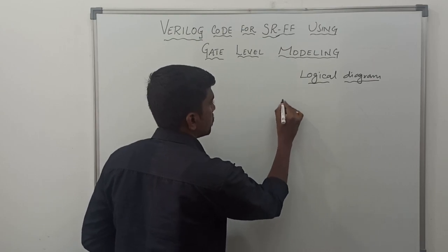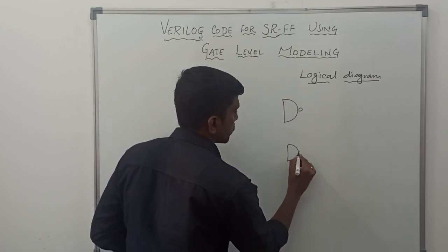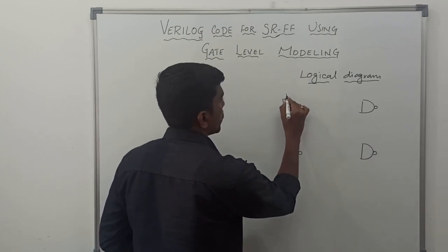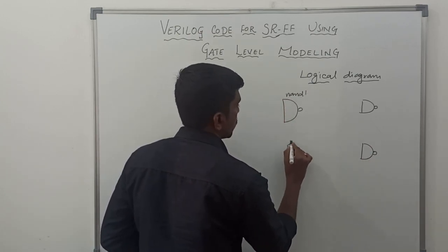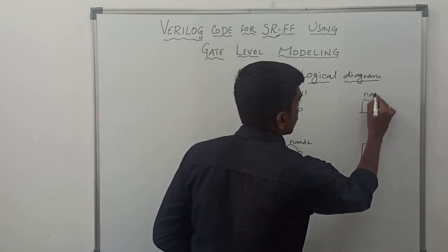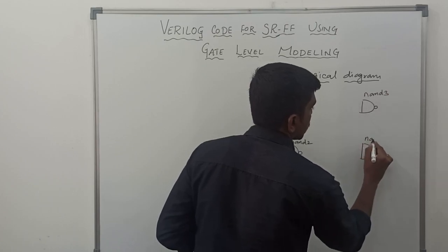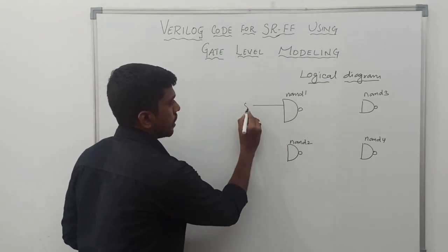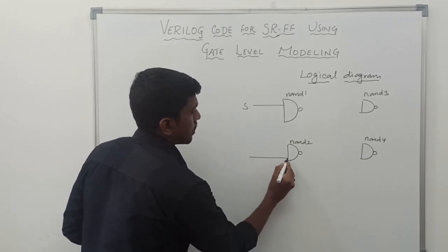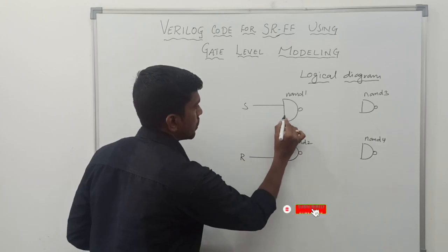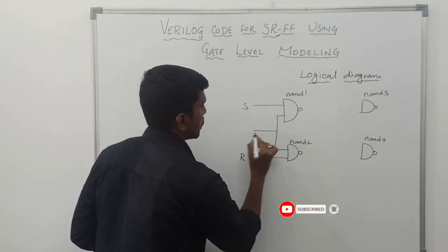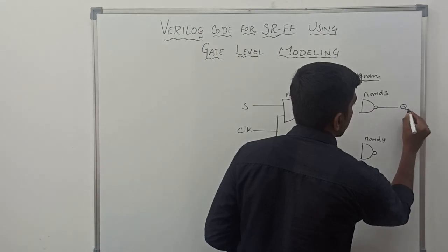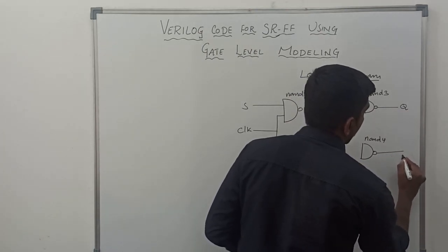In this logical diagram, there are four NAND gates named NAND1, NAND2, NAND3, and NAND4. The first input of NAND1 is S, and the input of NAND2 is R. Both share the clock as an input signal. The output of NAND3 is Q, and the output of NAND4 is Q bar.